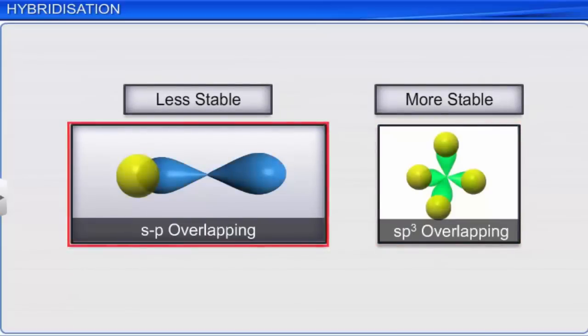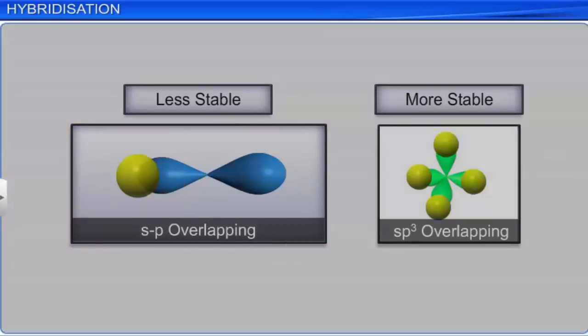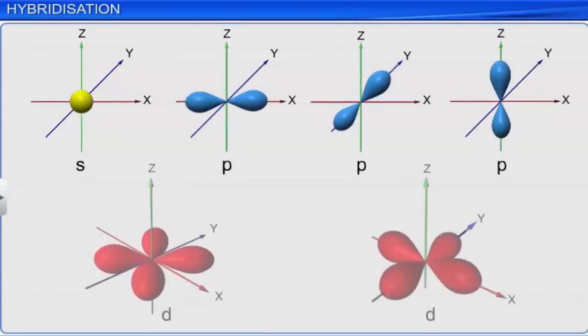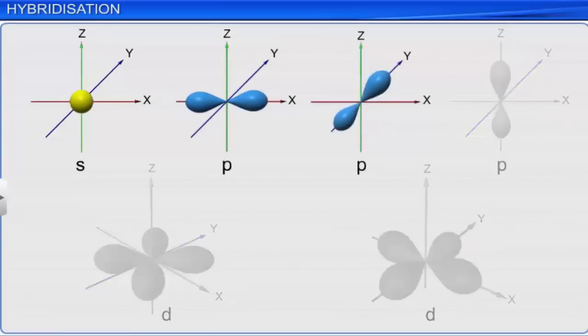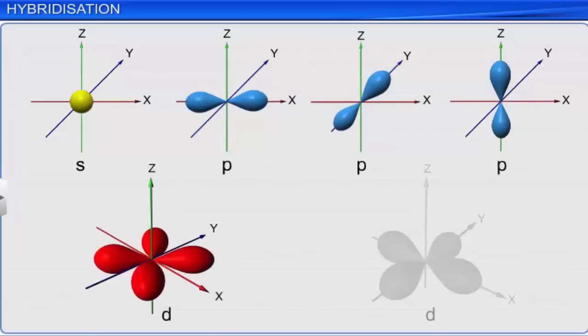These hybrid orbitals align themselves in space such that there is minimum repulsion between the electron pairs. The bonds formed by hybrid orbitals are more stable compared to those formed by pure atomic orbitals. The phenomenon of hybridization is observed in the atomic orbitals S, P, and D. Their possible combinations are SP, SP², SP³, SP³D, and SP³D².